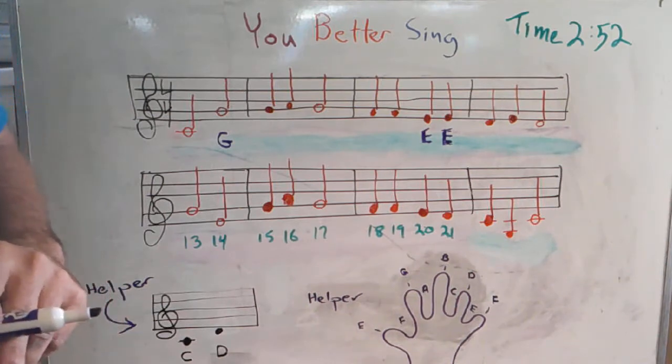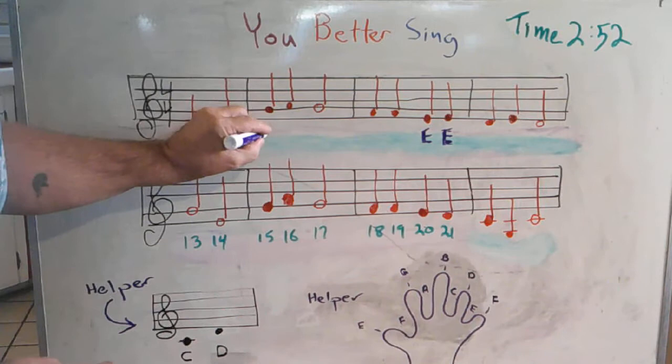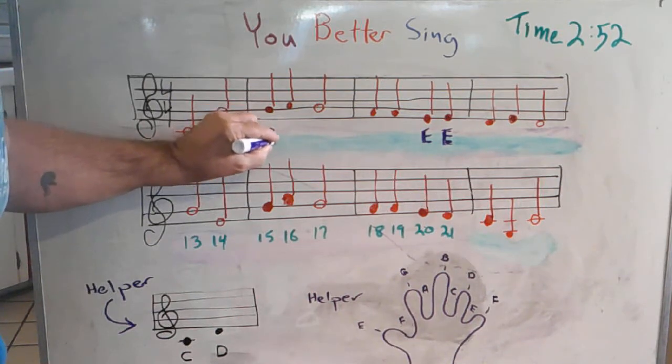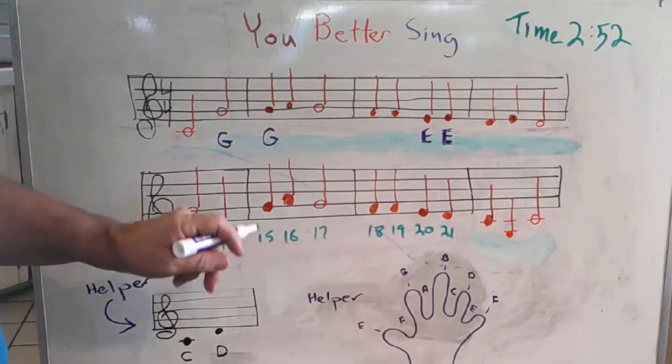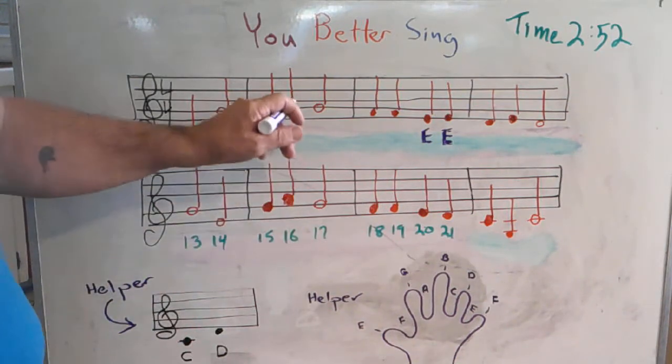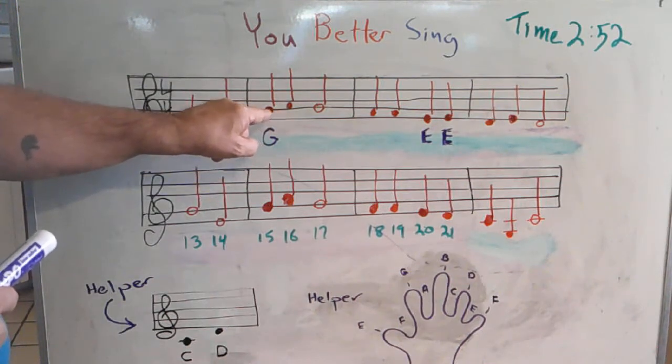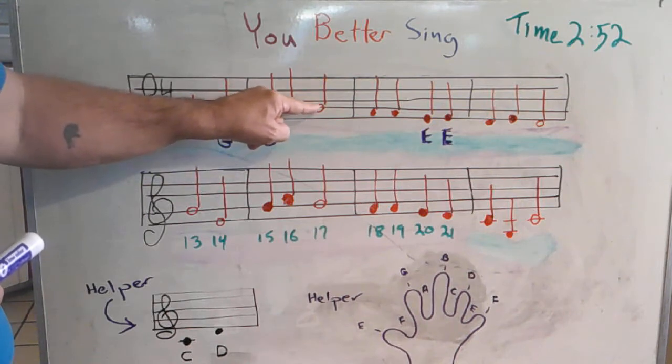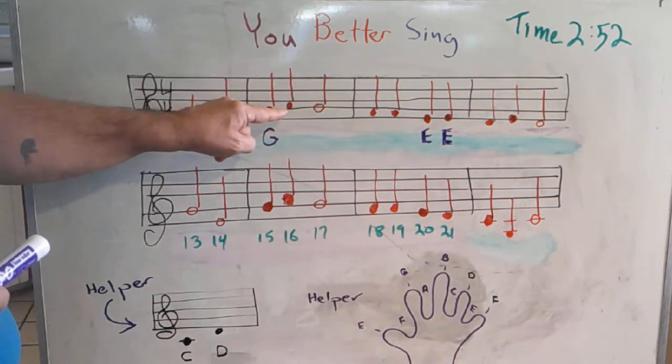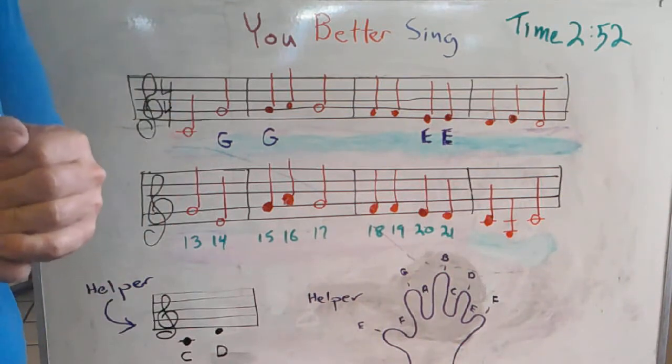This note and this note are also G's. Now the next note isn't. The next note is a space. You see how this is like shish kebab, there's a line right through the middle? And then this one sits in between those. That's a space.